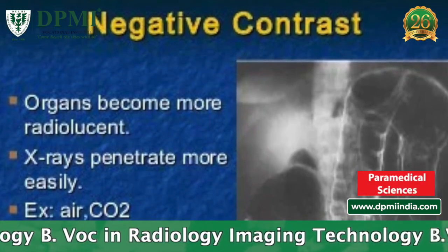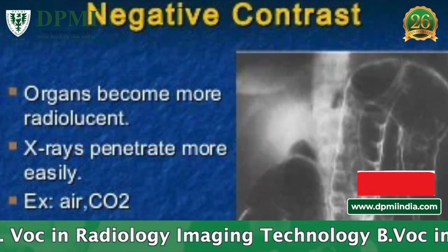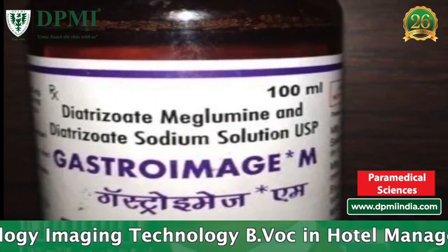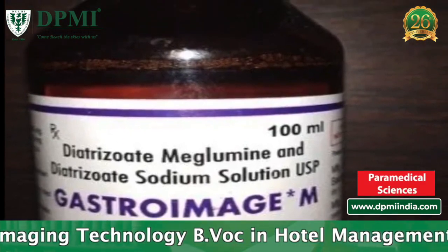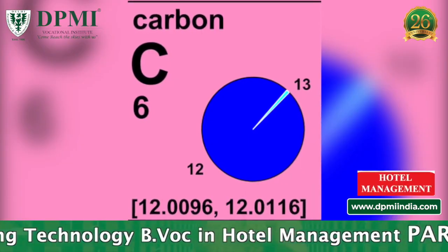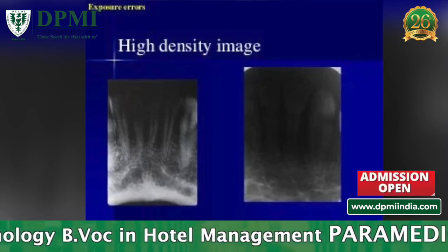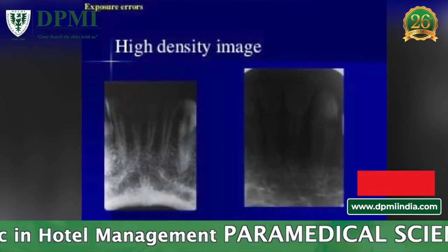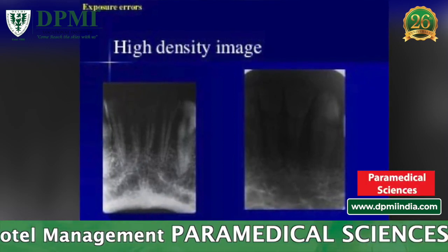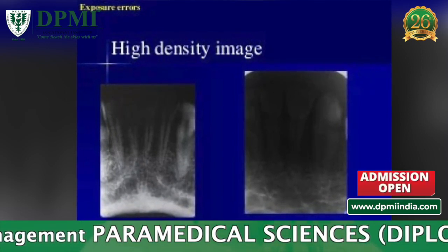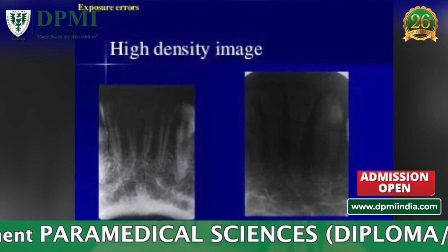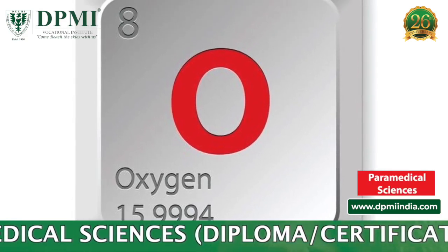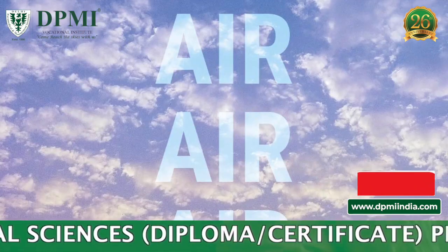Types of contrast media — Negative contrast agents. The absorption of x-rays by a substance is dependent upon several factors, one of which is the atomic weight of the substance. Those materials that have lower atomic weights will attenuate less radiation. The resultant radiation will produce a greater radiographic density — a darker image on the image receptor. Negative contrast media includes oxygen, carbon dioxide, and air.